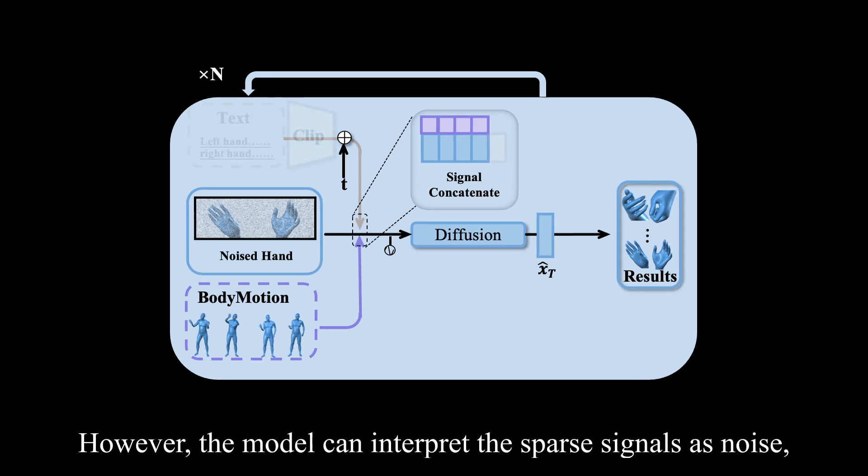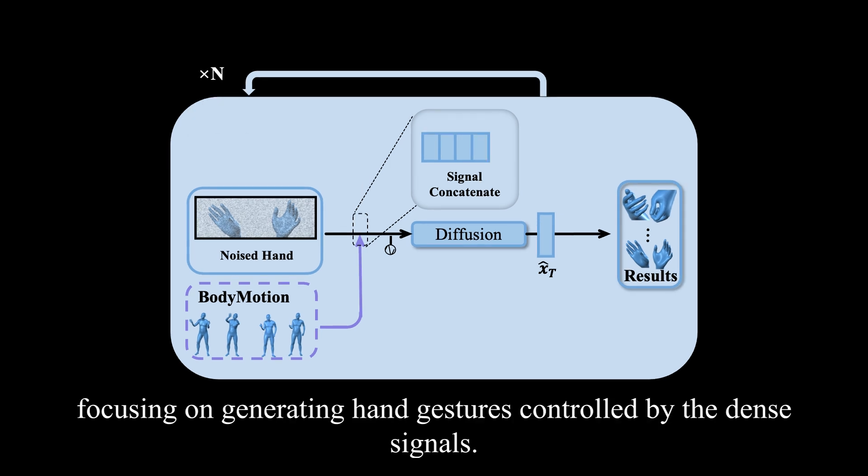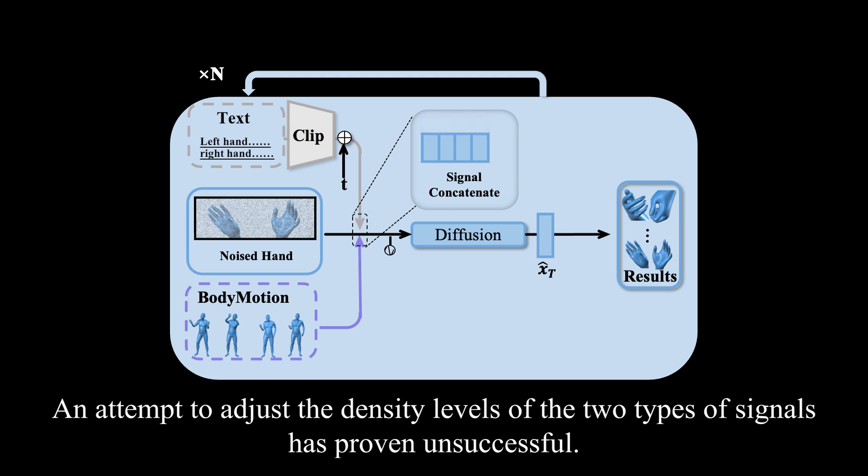However, the model can interpret the sparse signals as noise, focusing on generating hand gestures controlled by the dense signals. An attempt to adjust the density levels of the two types of signals has proven unsuccessful.